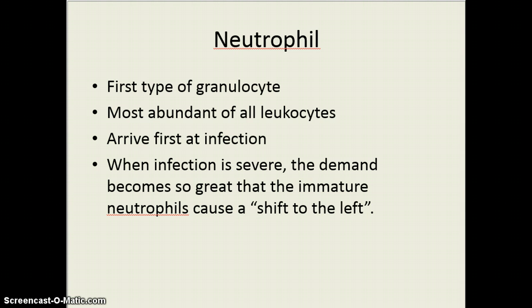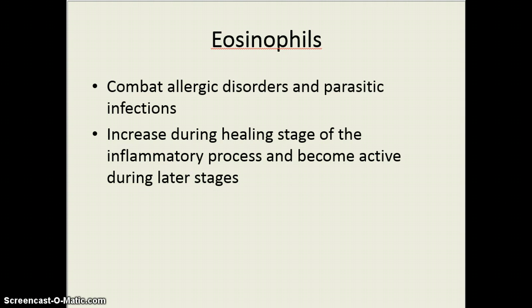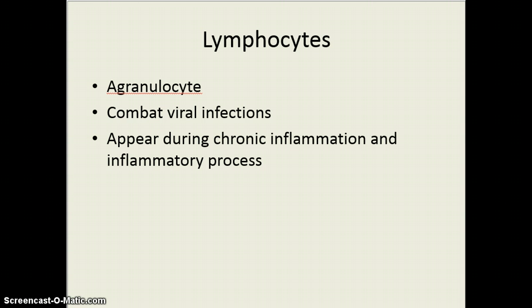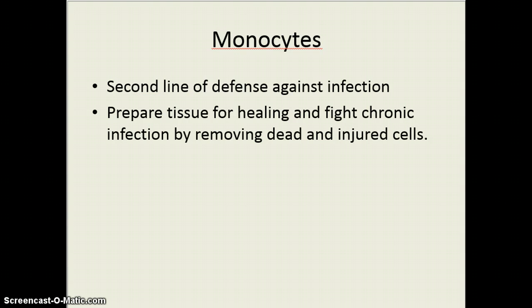The shift to the left occurs when tissue breaks down from allergy, burns, myocardial infarctions, and other such things. Eosinophils are associated with allergic and parasitic responses. They increase during the healing stage of the inflammatory process and become active during later stages. Basophils are associated with chronic inflammation in the healing stage, which is normal during an infectious process. Lymphocytes are agranulocytes that help combat viral infections. We will also see a decrease in lymphocytes with sepsis or an overwhelming infection. Monocytes are the second line of defense — larger than neutrophils, they have a slower reaction but are very efficient at removing dead and injured cells and cleaning up the infection site.